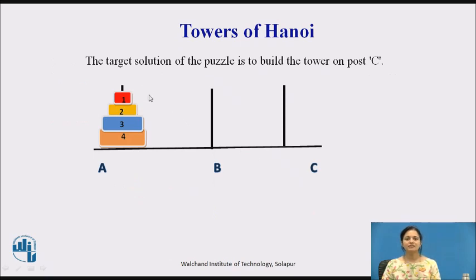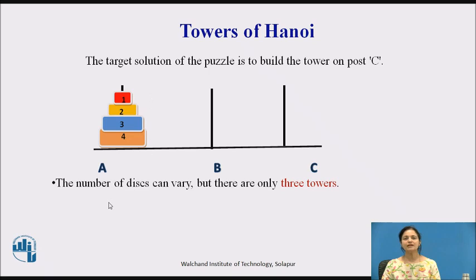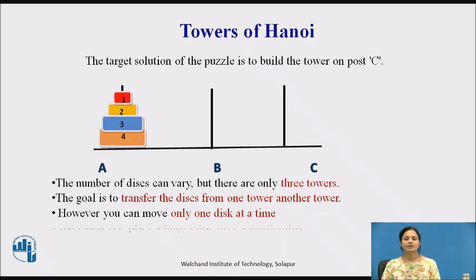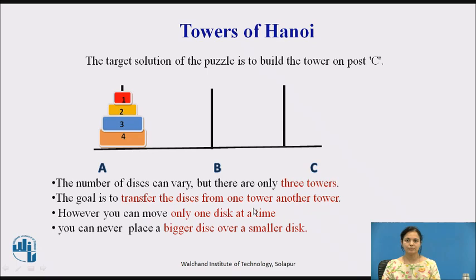Now, for this, we have some rules. The number of disks can vary but we always have only 3 towers, and we have to transfer disks from one tower to another. One important condition is that only one disk can be moved at a time, and you cannot place a bigger disk over a smaller disk — that would be the wrong way.